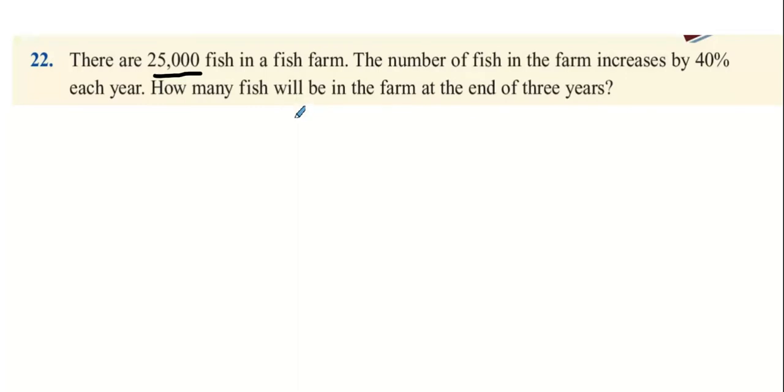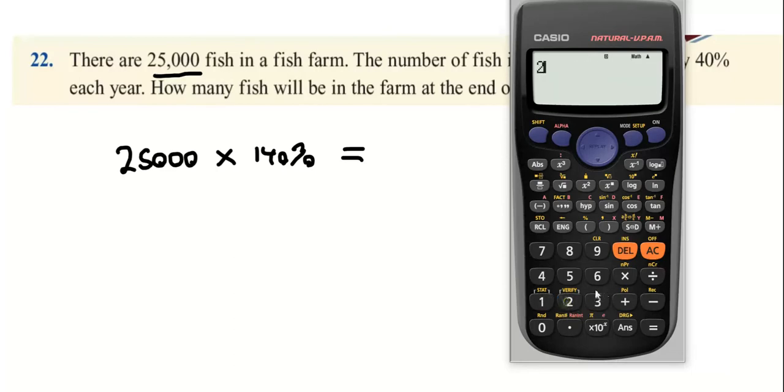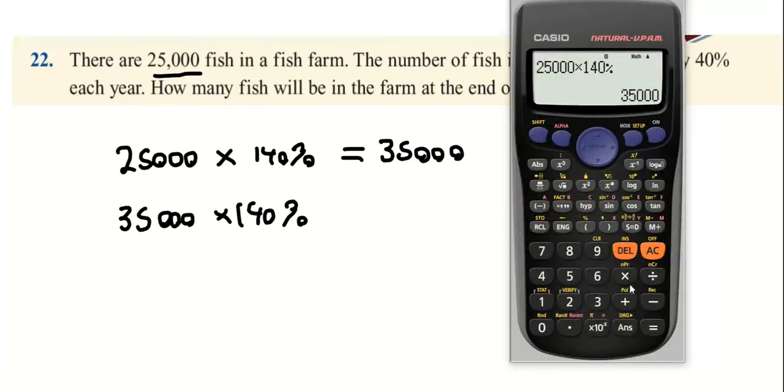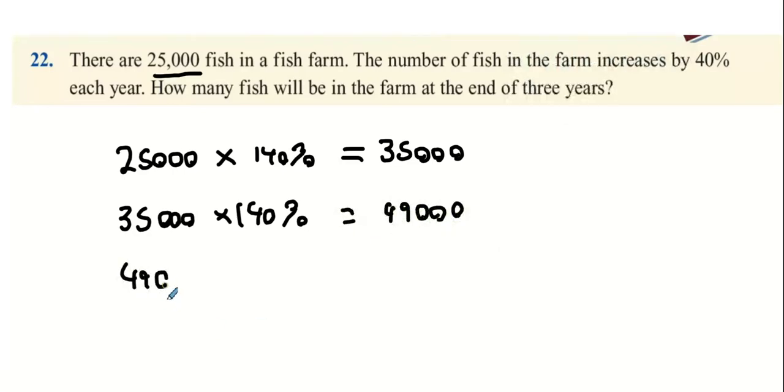Question 22: There are 25,000 fish in a fish farm. The number increases by 40% each year. How many fish will be in the farm at the end of three years? Multiply by 140%. So 25,000 multiplied by 140% equals 35,000 fish at the end of year one. Then 35,000 multiplied by 140% equals 49,000 at the end of year two. Finally, 49,000 multiplied by 140% equals 68,600.